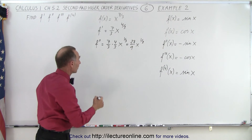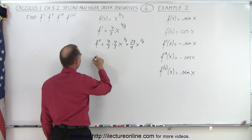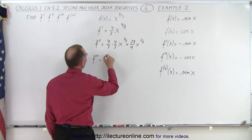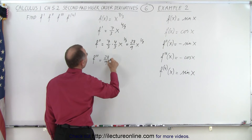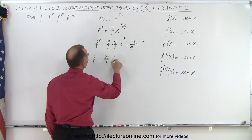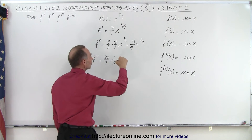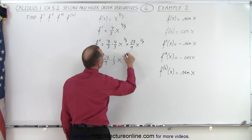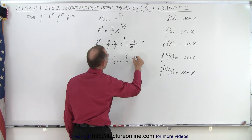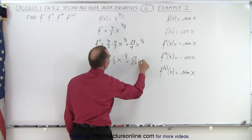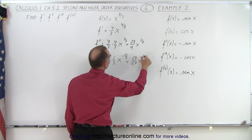Now we take the third derivative. I have f triple prime, that is equal to 28 over nine times one over three, x to the one-third minus three-thirds, that's minus two-thirds, which is equal to 28 over 27, x to the minus two-thirds.